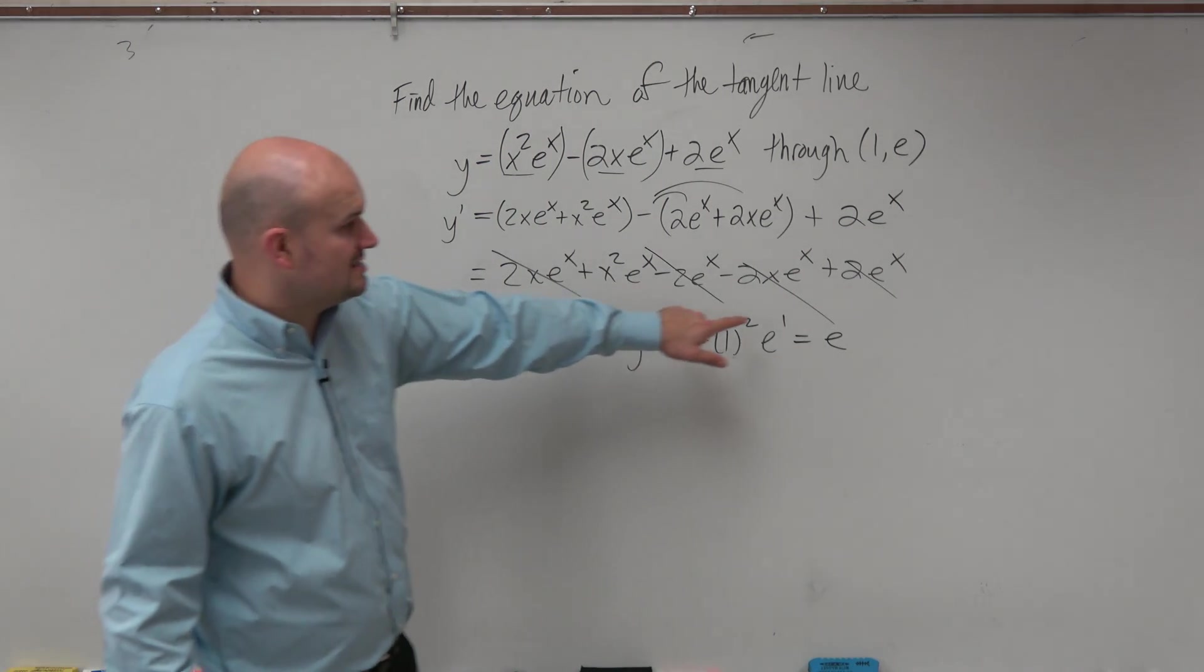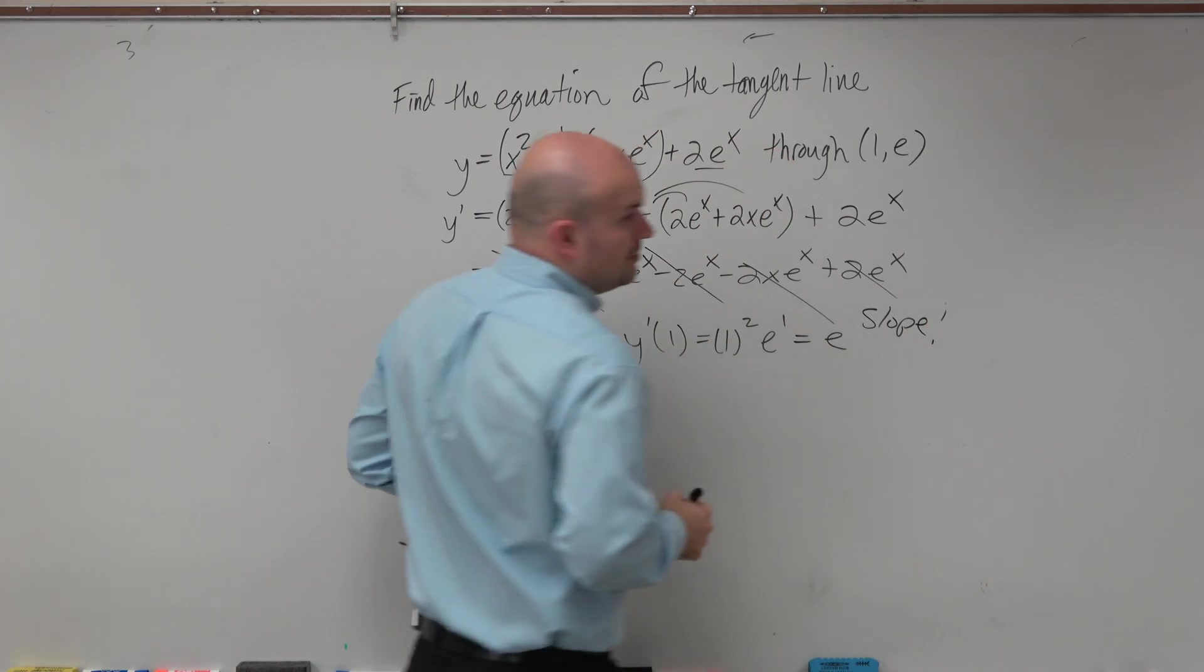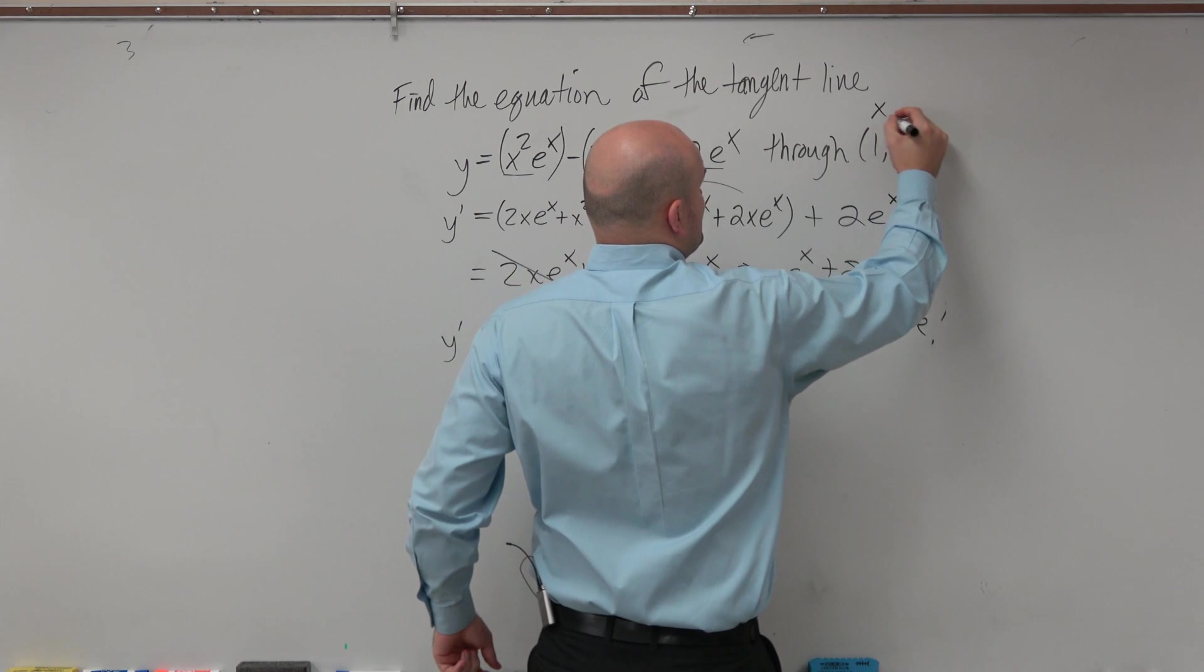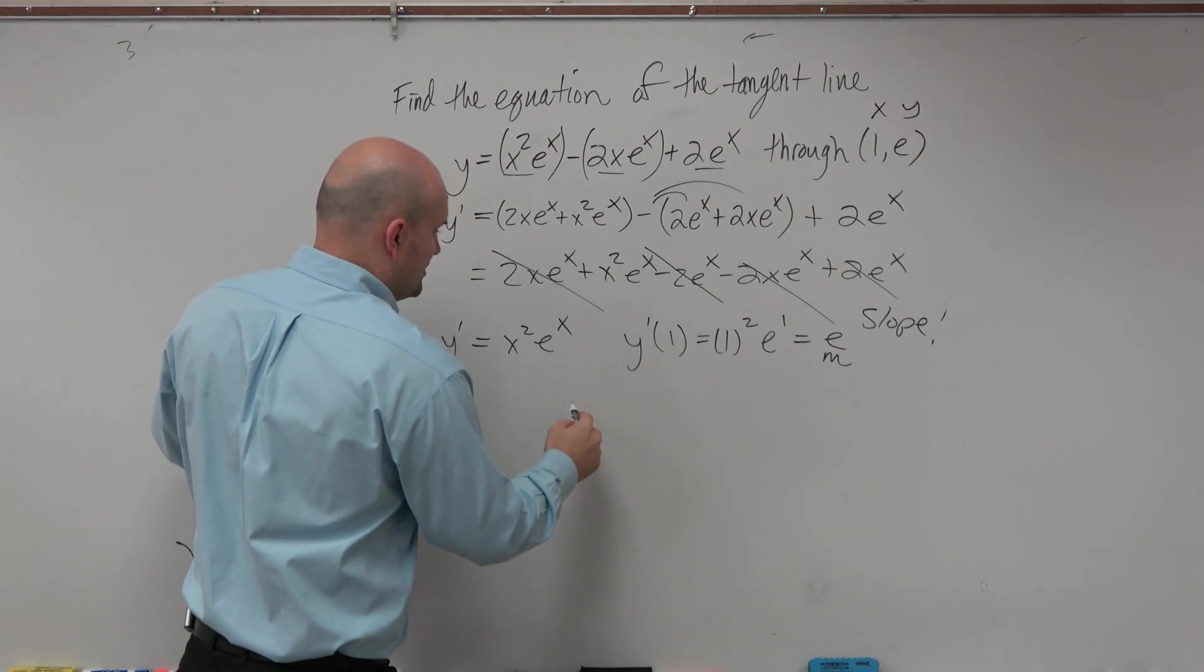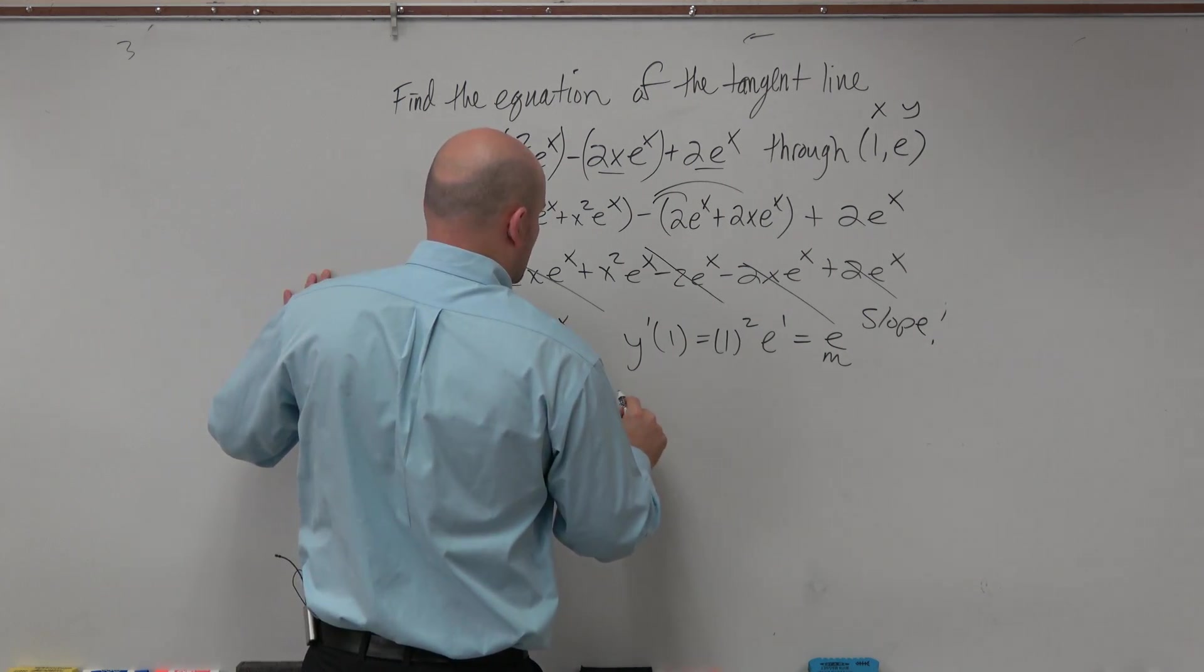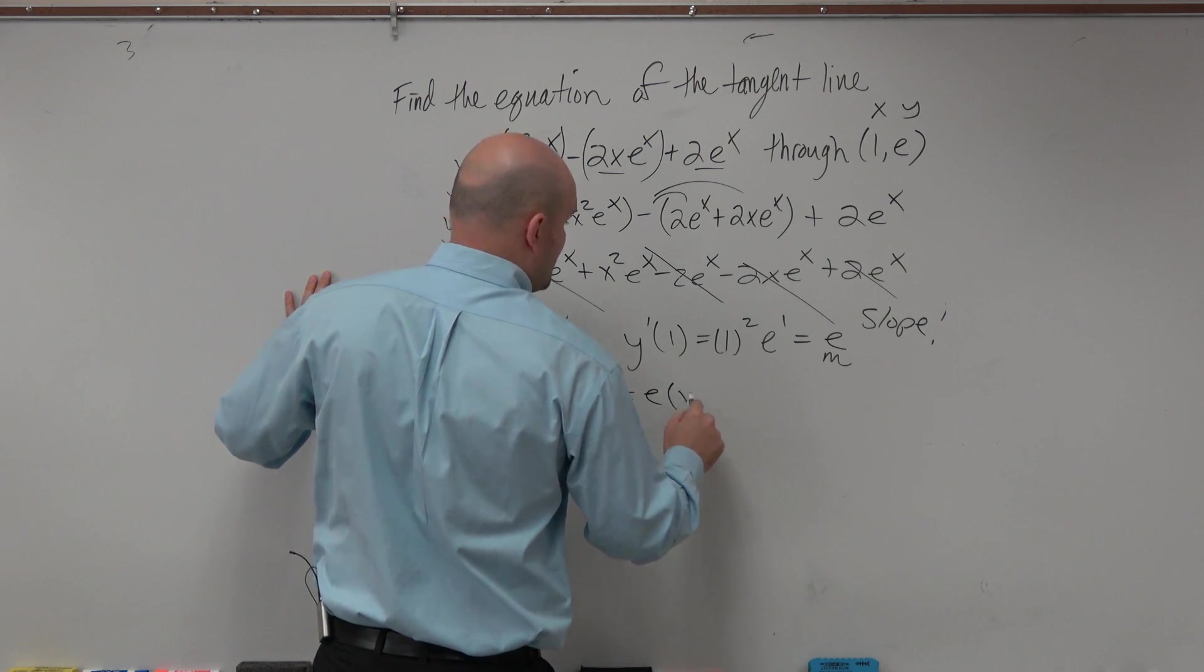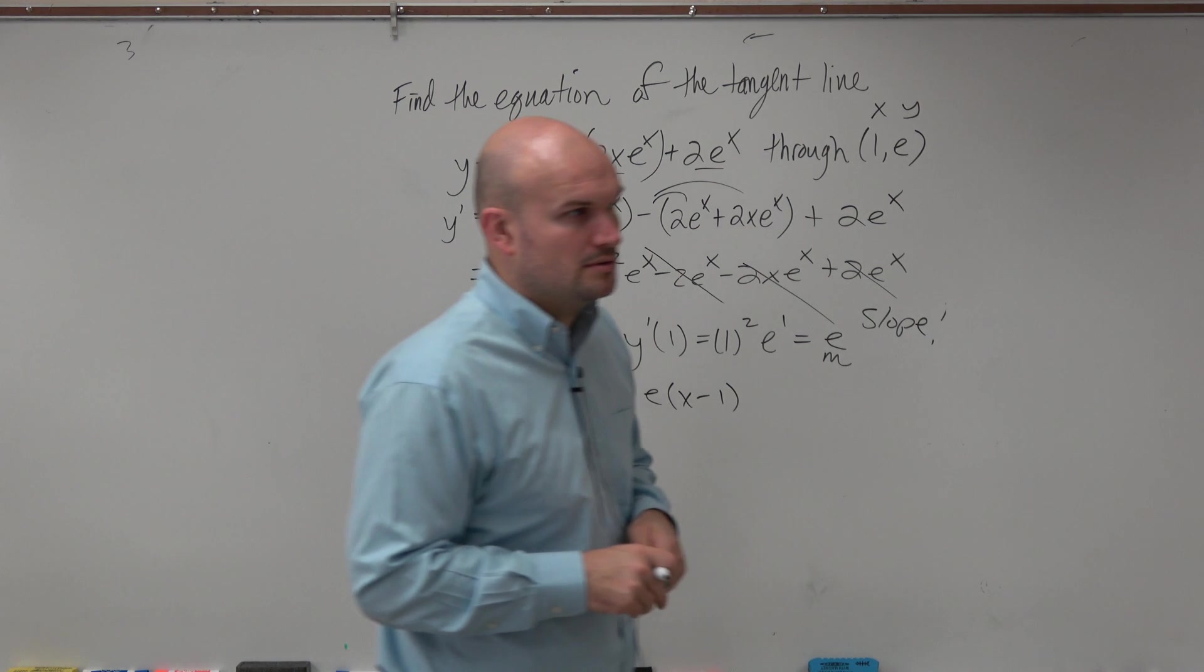So now, this is my slope. That's the slope at that point. And then I have my x and y coordinates. This is my m. So therefore, I'm all good to go. So y minus 0 equals e times (x minus 1). Done.